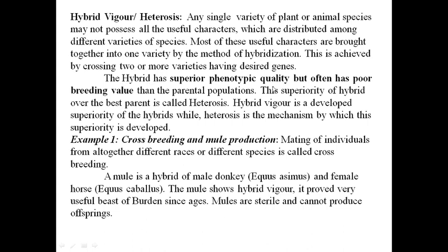The hybrid has superior phenotypic quality but often has poor breeding value. Hybridization gives high-yielding varieties, more resistant varieties, seedless fruits, early maturing varieties, and higher milk-producing domestic animals, but their breeding value is very poor compared to the parental population. This superiority of the hybrid over the best parent is called heterosis. Hybrid vigor is the developed superiority of the hybrid, while heterosis is the mechanism by which this superiority is developed.